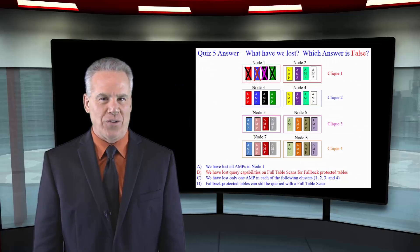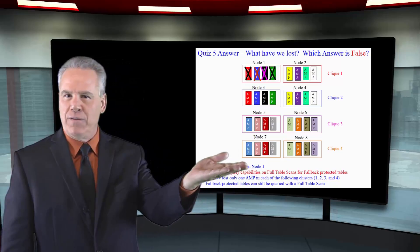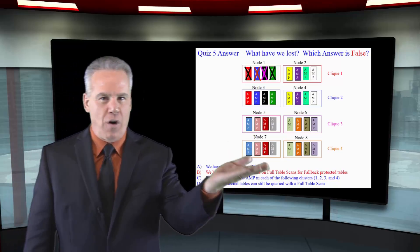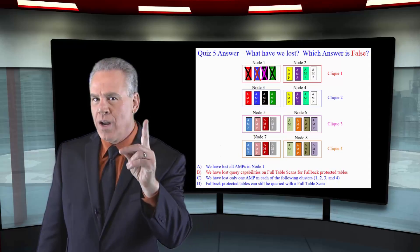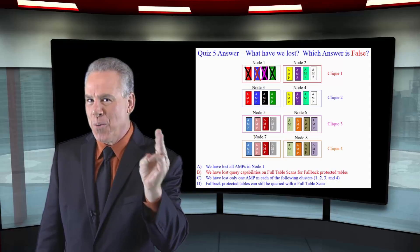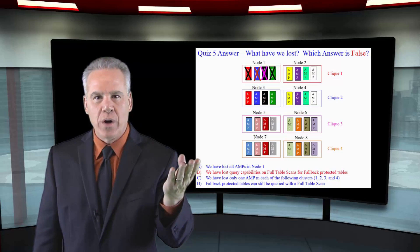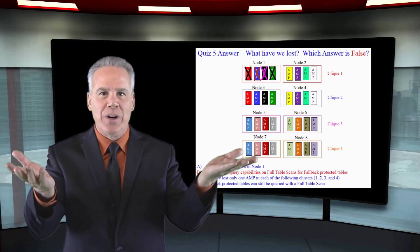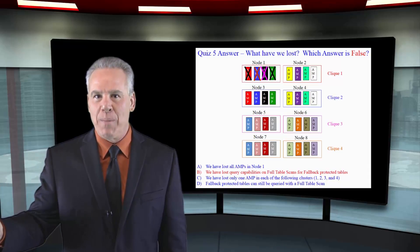B was the false answer. We have lost query capabilities on full table scans on fallback protected tables. No, we haven't. We've lost one AMP in cluster 1, one AMP in cluster 2, one AMP in cluster 3, one AMP in cluster 4. Go ahead and query it. We can satisfy that query because the data is there if that table is fallback protected.